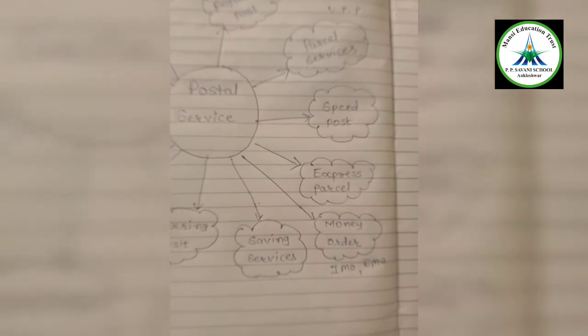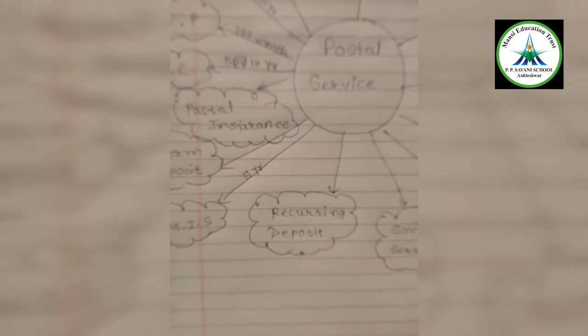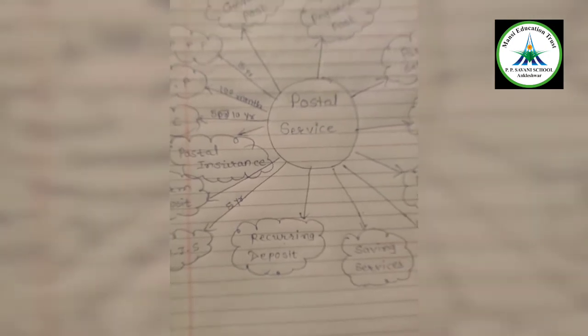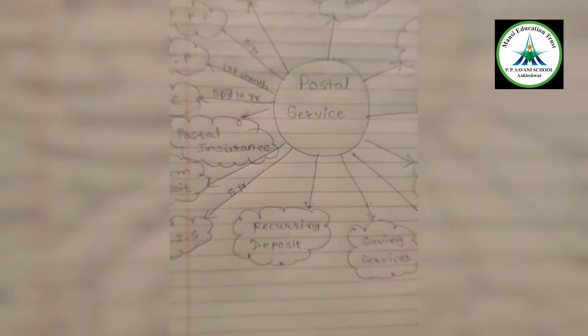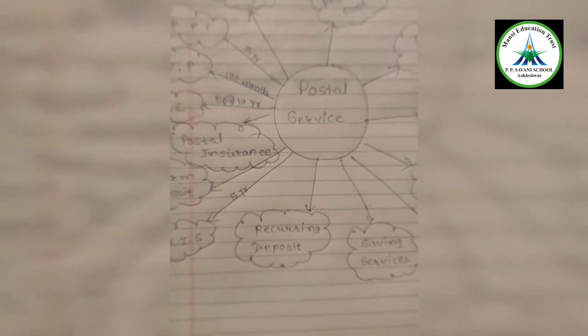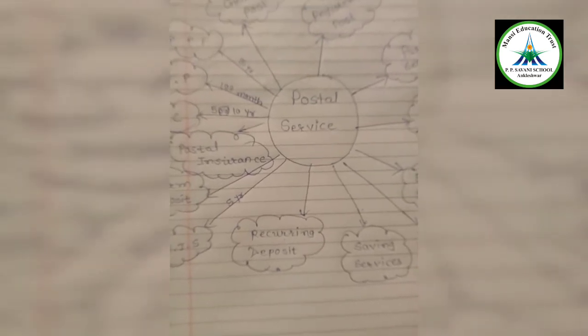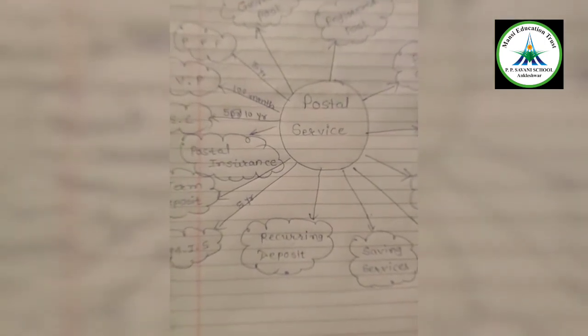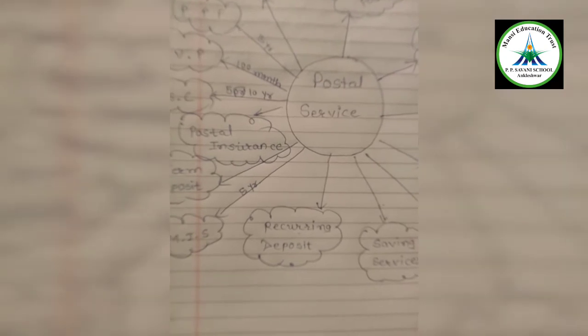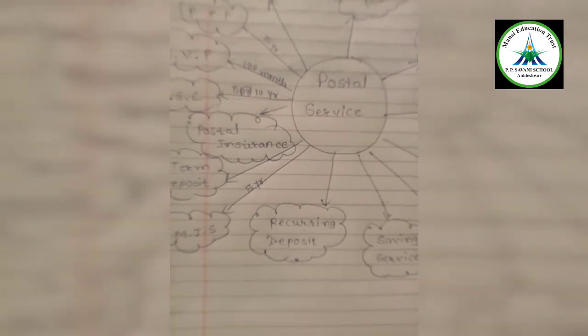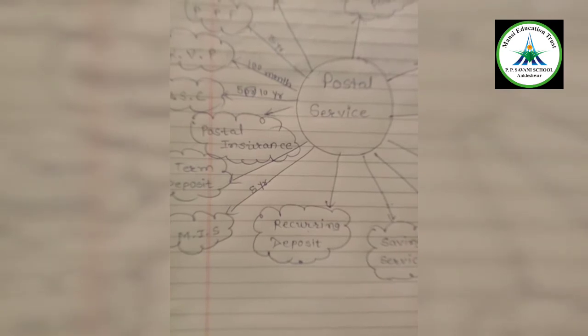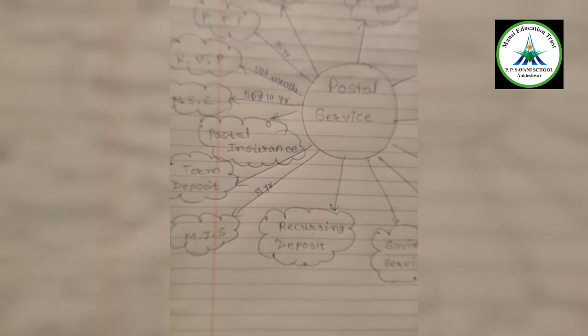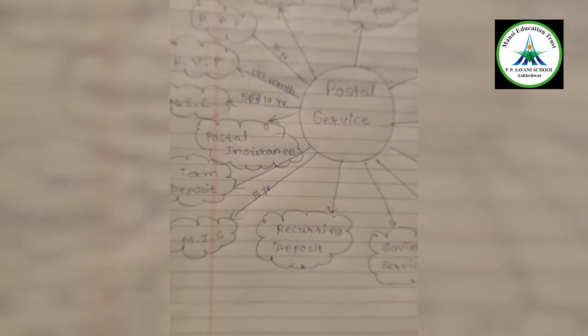Next is recurring deposit. Recurring deposit is whereby account holder has to pay the amount that is decided by both parties to the post office on the pre-decided date. At the end of five years when the account gets mature, your principal amount plus interest will be received by the account holder. And if you want to extend it for another five years it can be possible.